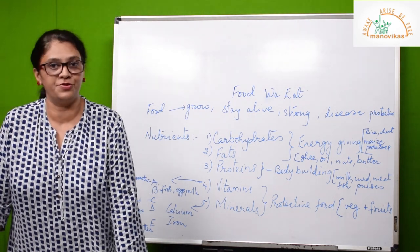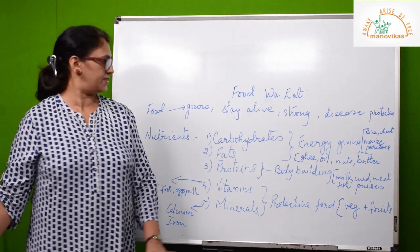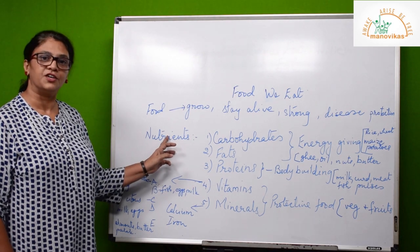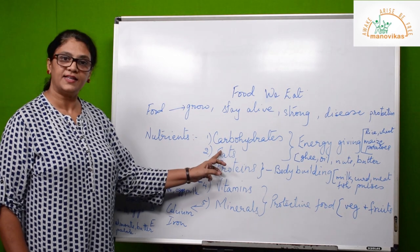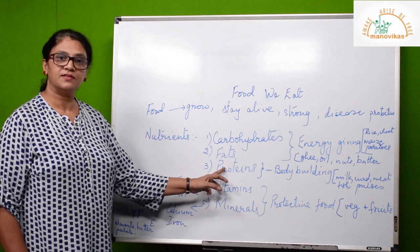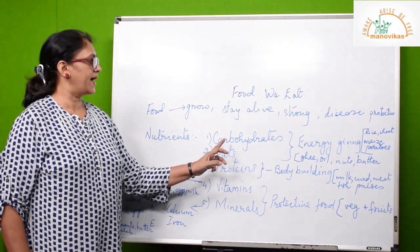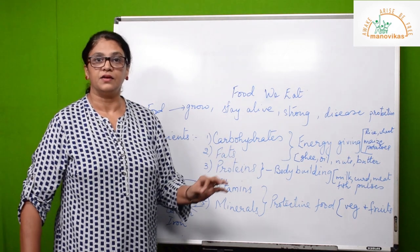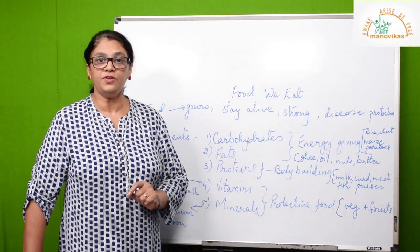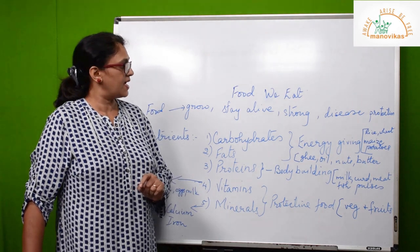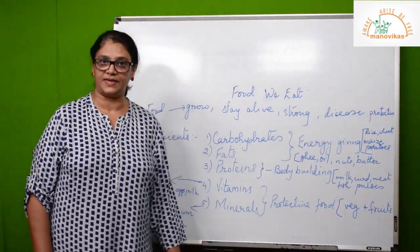Food contains five nutrients. The five nutrients in food are carbohydrates, fats, proteins, vitamins, and minerals. Carbohydrates are nutrients that give us energy. Foods that give us carbohydrates are rice, wheat, maize, and potatoes.